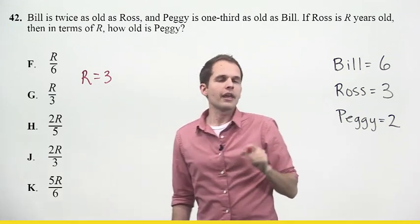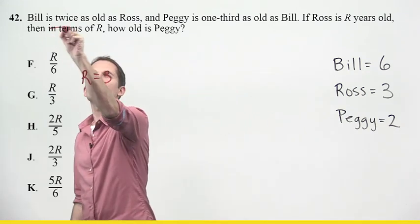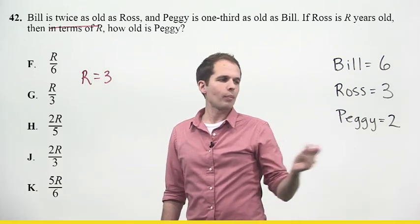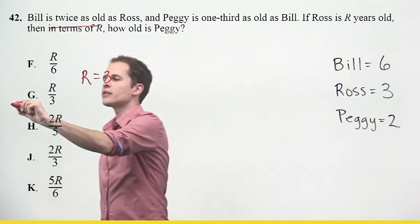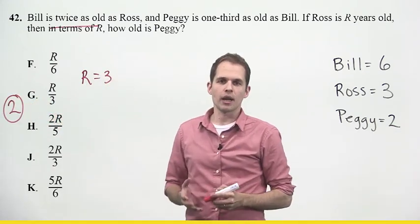Then in terms of r, and in terms of is kind of like a meaningless expression for us, so I'm just going to cross that out. Then how old is Peggy? Well, Peggy we said is just two. So that's the answer to the question, and the answer to the question is what we call the target number. It's the number I'm looking for.